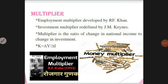The formula for the multiplier is: K equals delta Y divided by delta I. That means the change in income (Y) divided by the change in investment (I).